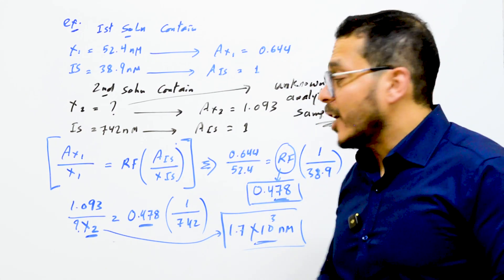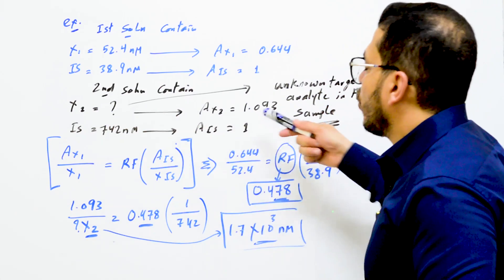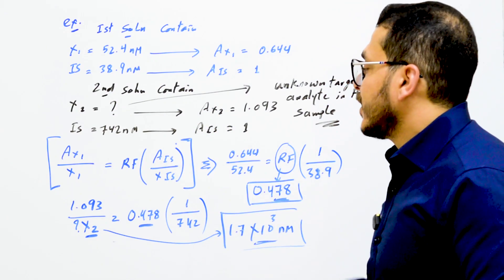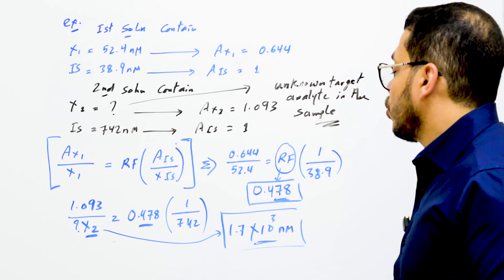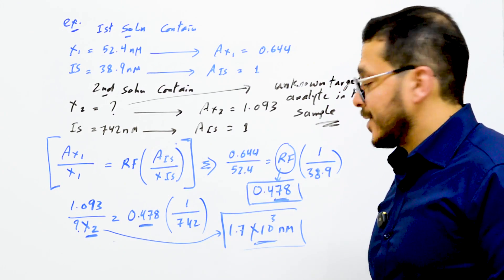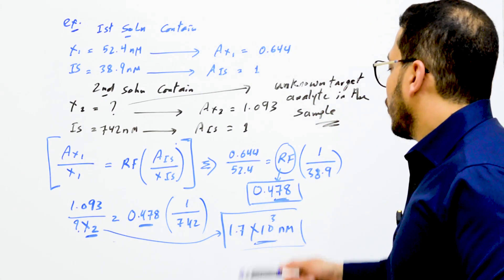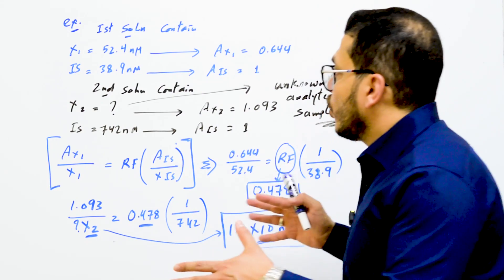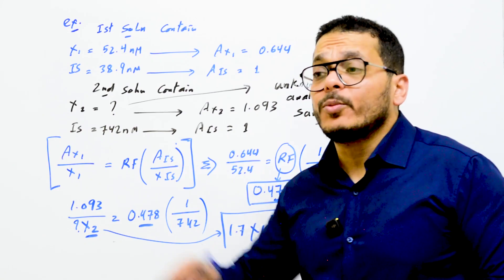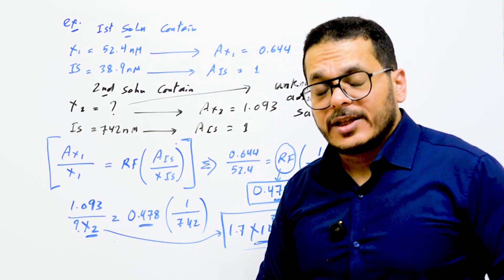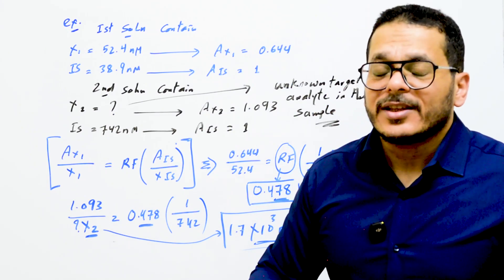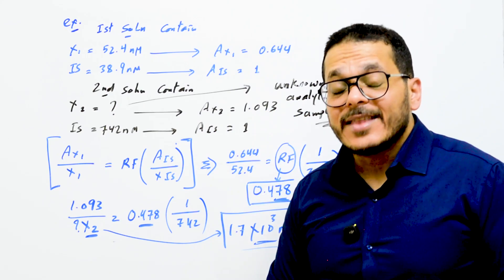This response factor of 0.478 will be used to quantify all unknown target analytes in the samples. Using the same equation for the solution containing the unknown target analyte — the area of the analyte divided by the unknown concentration equals 0.478 multiplied by the area of the internal standard divided by the concentration of the internal standard of the second solution — you then calculate the concentration of the unknown. You have now obtained the concentration of the unknown target analyte without any effect, compensating for all effects during the whole procedure from beginning to end.